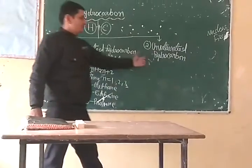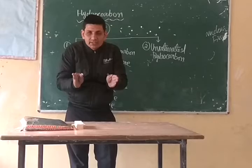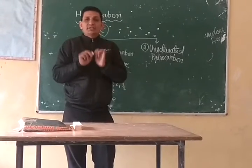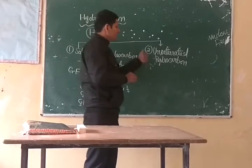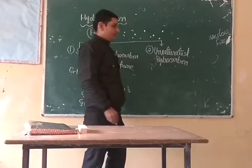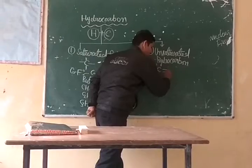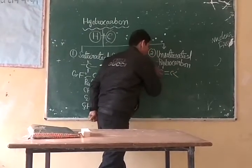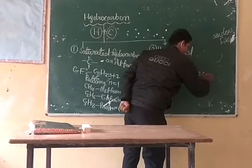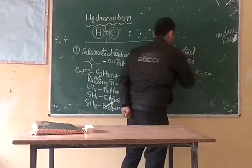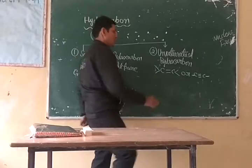After this I am telling you unsaturated hydrocarbon. Hydrocarbon in which carbon atoms are connected by double bond or triple bond is called unsaturated hydrocarbon. They are of two types: first, alkene, and second, alkyne.